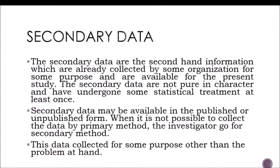Secondary data is second-hand information which is already collected by some organization for some purpose and is available for the present study. Secondary data is not pure in character and has undergone some statistical treatment at least once. It may be available in published or unpublished form. When it is not possible to collect data by primary method, the investigator goes for secondary data. This data was collected for some purpose other than the problem at hand — meaning it is used by another study or research.